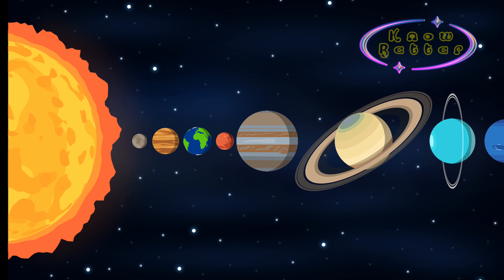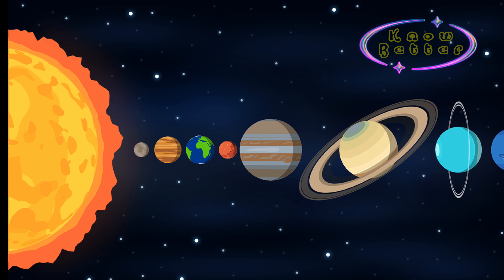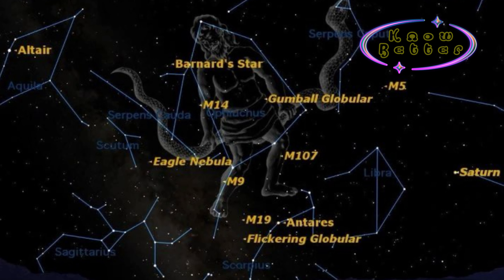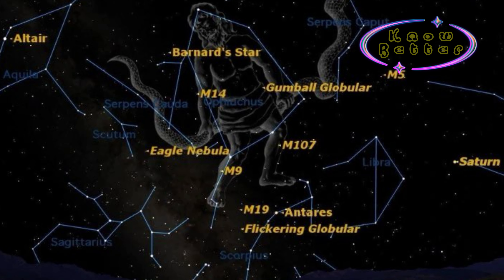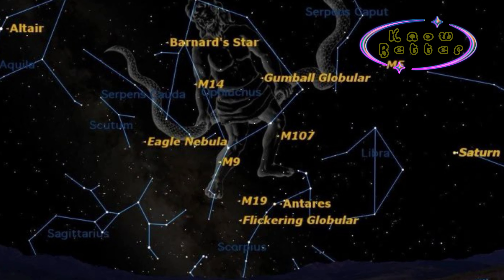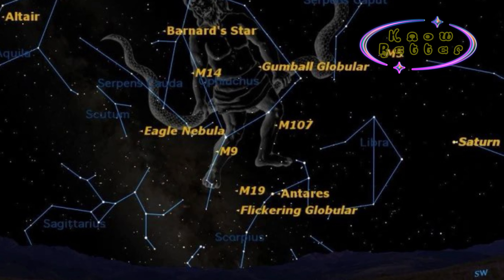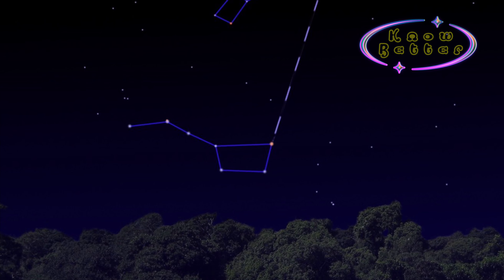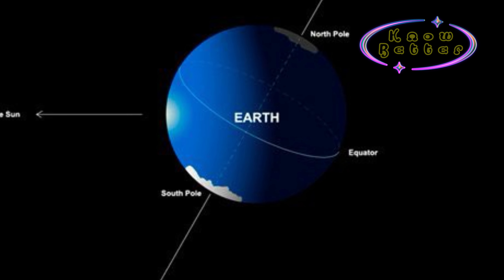Distance does matter — that's why we can feel the Sun so obviously, while other stars don't provide us that amount of heat or light. Groups of stars are called constellations. While watching the sky at nighttime, you might have noticed various patterns formed by different groups of stars. These are called constellations. Ursa Major, or the Big Bear, and Saptarishi, the Seven Sages, are examples of constellations.